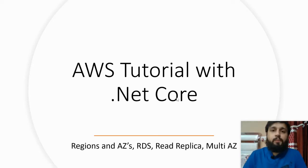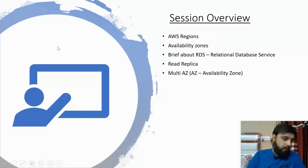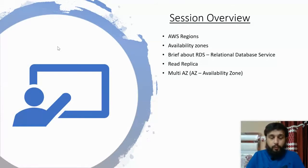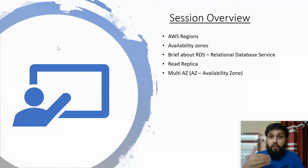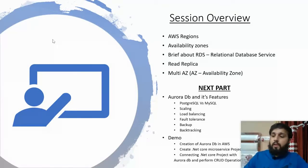AWS tutorial with .NET Core. Welcome to Coding Book, my name is Chanda Kashwaryani. This is a playlist where we are going to do the practical implementation of AWS Aurora DB with .NET Core. Before we do the practical implementation, I realized we should be familiar with a few terms like AWS regions, availability zones, RDS, read replicas, and multi-AZ support. These terms are really important to understand because only then you would be able to understand the benefit of AWS Aurora DB — why you should go for Aurora DB and what additional benefits it provides over other RDS databases.